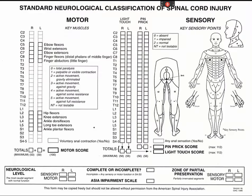The American Spinal Injury Association (ASIA) Impairment Scale is commonly used for classifying severity of impairment resulting from spinal cord injury. The spinal cord consists of nerves that connect the brain to the nerves in the body and is surrounded for most of its length by the vertebrae that form the spine.